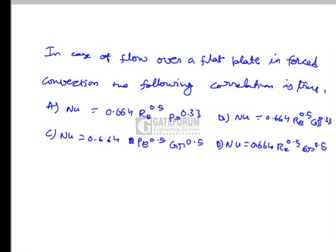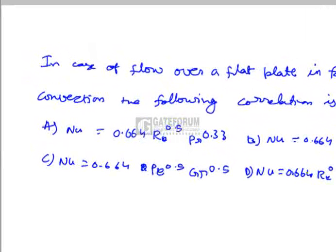In the case of flow over a flat plate in forced convection, the following correlation is true. Option A: Nu = 0.664 × Re^0.5 × Pr^0.33. Option B: Nu = 0.664 × Re^0.5 × Gr^0.3, where Gr represents the Grashoff number.